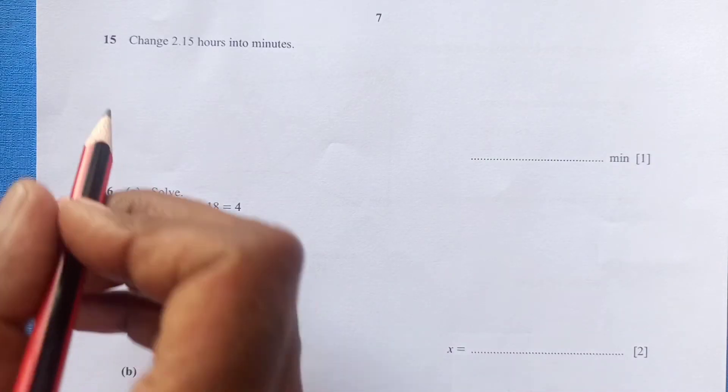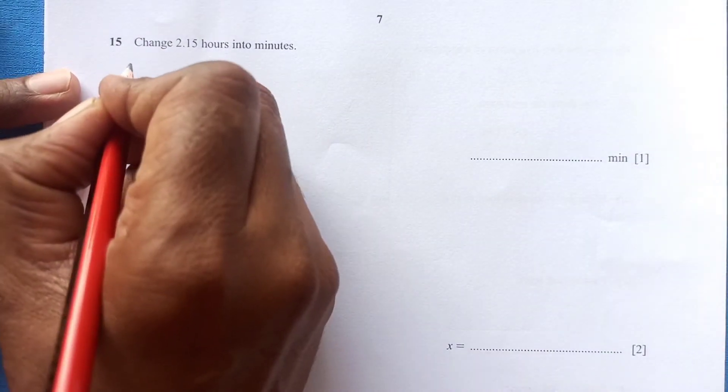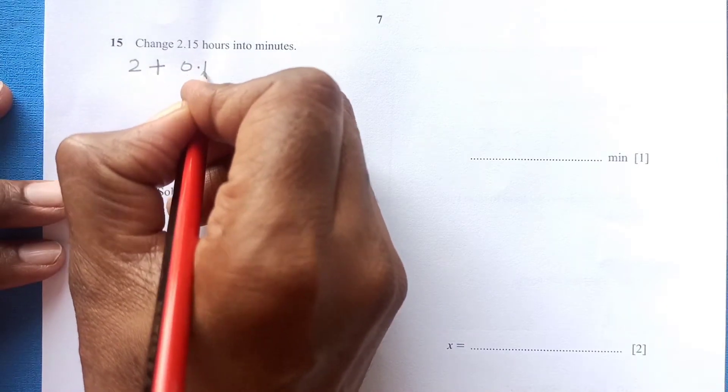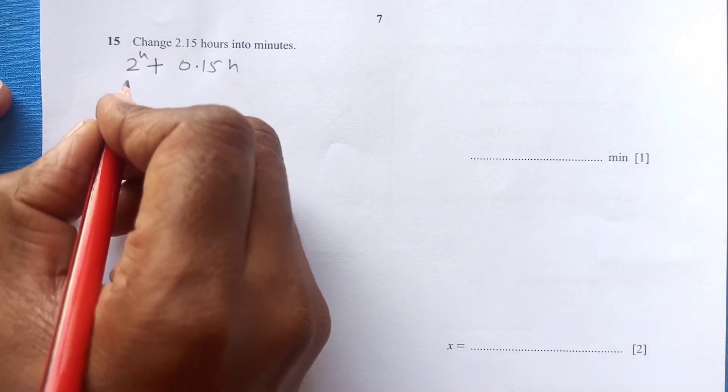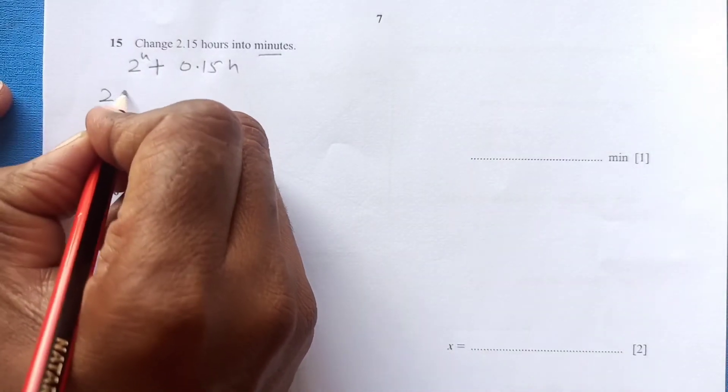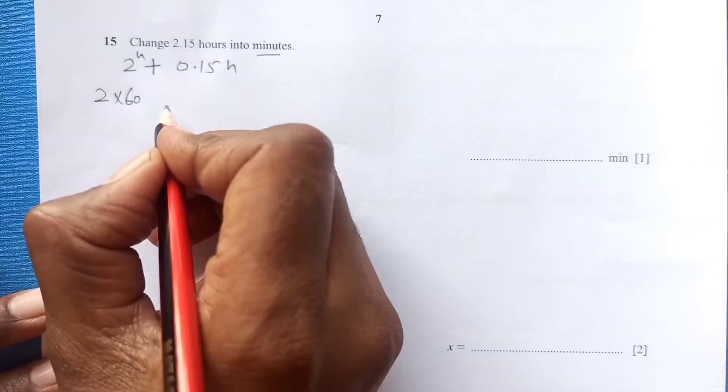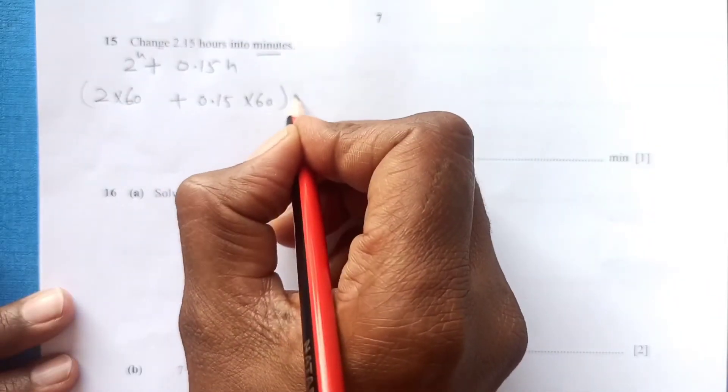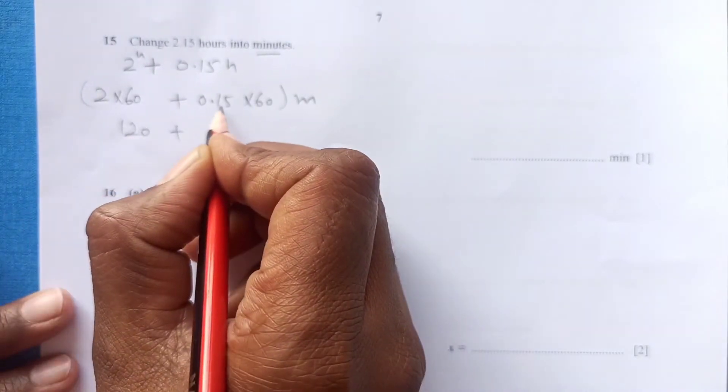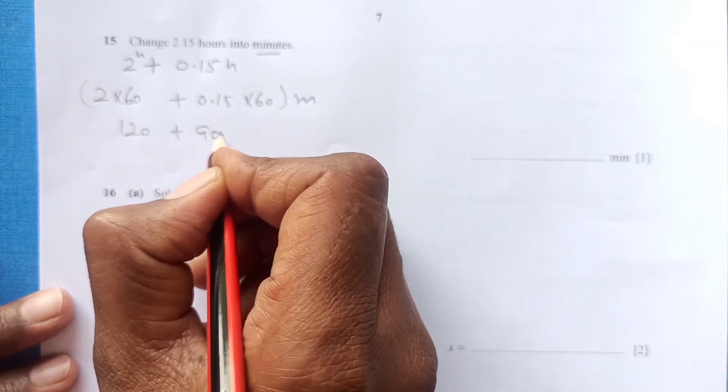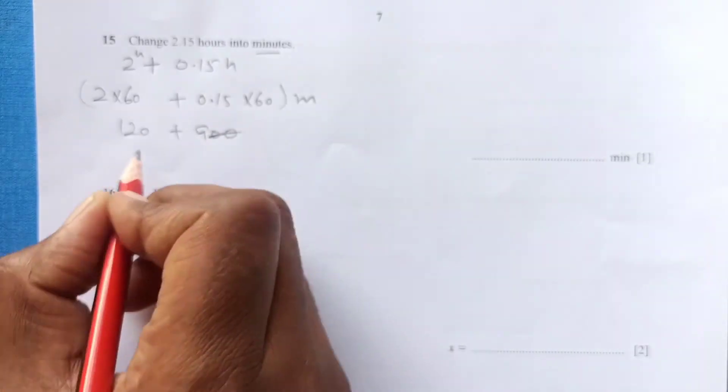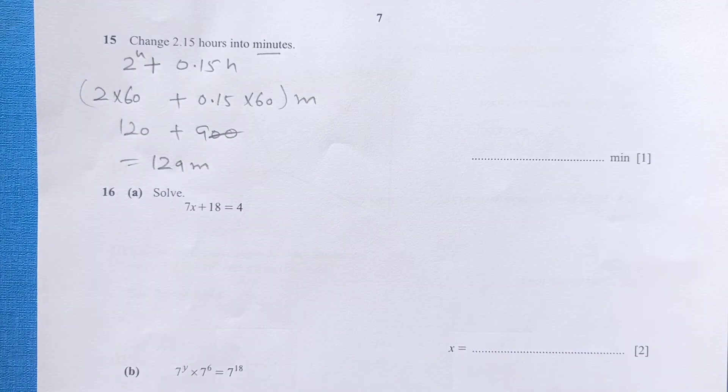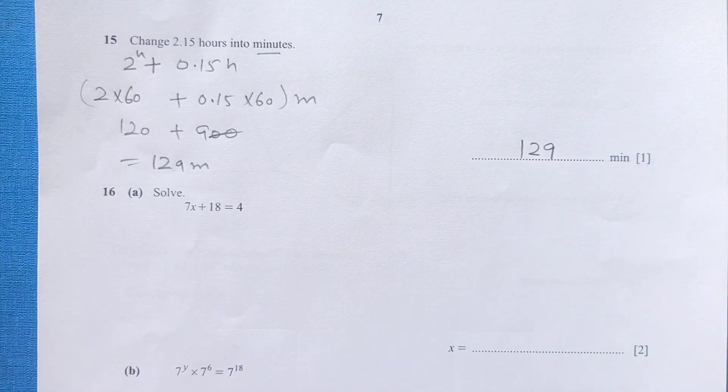Question 15. Change 2.15 hours into minutes. So we have here two parts of this question: 2 plus 0.15. This is 2 hours here, so we can convert this into minutes. This is 2 times 60, then plus we have 0.15 times 60. So this entire thing will be in minutes now. So this is 120, 15 times 6 is 90, so 2 zeros 9 minutes. So we have 129 minutes as a whole here.